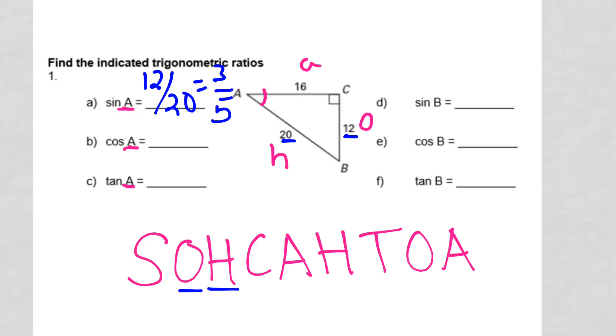The next thing, it says cosine of A. Well, I know that cosine is adjacent over hypotenuse. So it's going to be 16 over 20. That's also reducible, and I end up with 4 over 5.